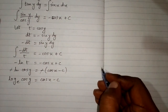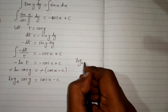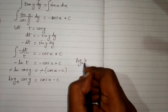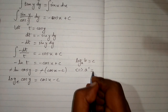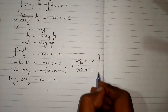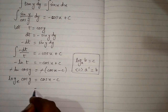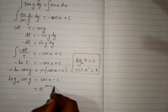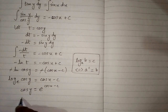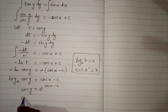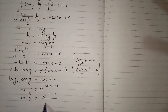We use the definition of logarithm: log base a of b equals c can be written as a to the power c equals b. Applying this definition here with base e, we get e to the power (cos x minus c) equals cos y. This can be written as cos y equals e to the power cos x upon e to the power c.